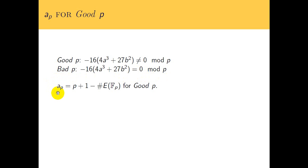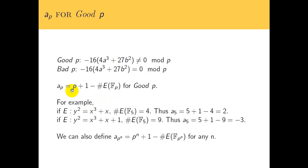Sometimes when you take the discriminant and reduce it mod p for some p, you actually get zero. So you don't get an elliptic curve in that case, and that's not what we want. So we call that bad p. For the good p's, we define this coefficient a_p by p plus 1 minus the size of the elliptic curve mod p.